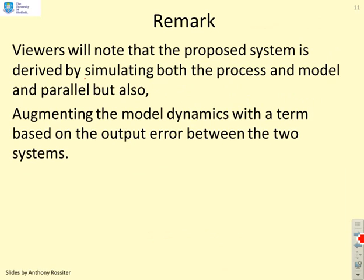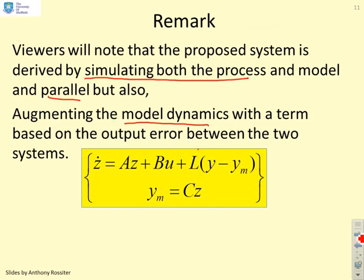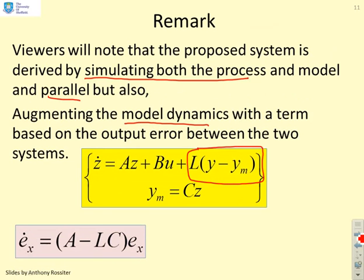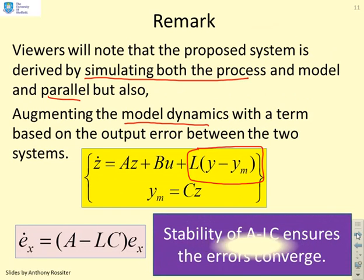So what's the key point? Notice that the proposed system is derived by simulating both the process and the model in parallel. But we've augmented the model dynamics with a term based on the output error between the two systems. We've added this term. And critically this error will converge if A minus LC is a stable transition matrix.